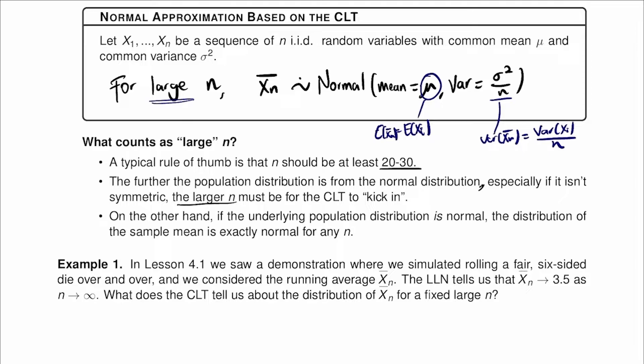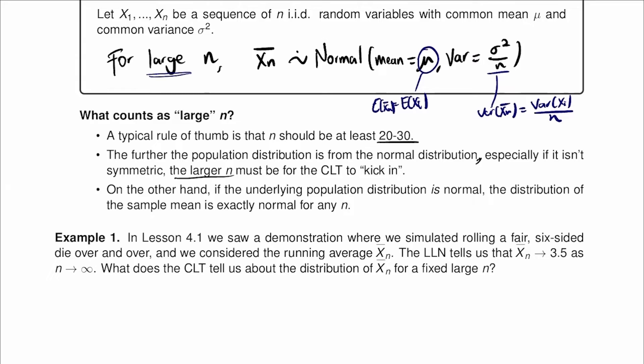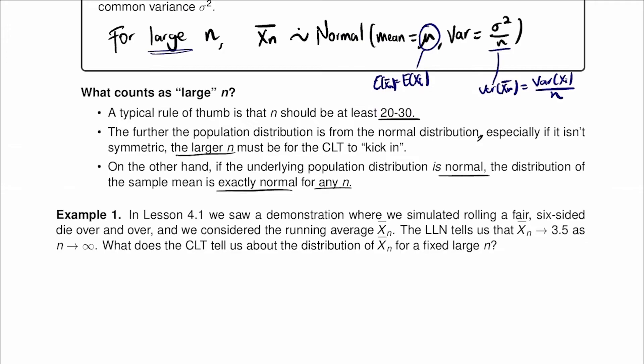On the other hand, if the underlying population distribution is normal, the distribution of the sample mean is exactly normal for any n. So if we know the population distribution is normal, then the sample mean is also normal for any n.